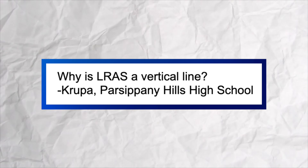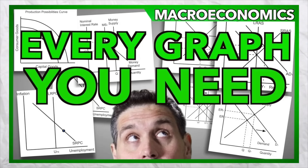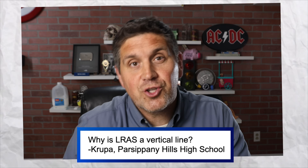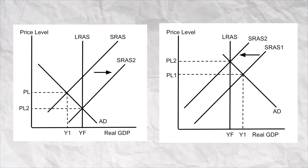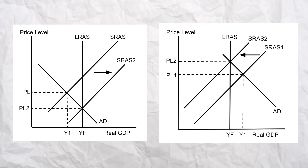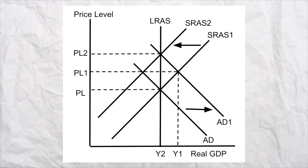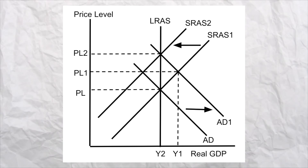Why is the long-run aggregate supply curve vertical? Make sure to watch the video on YouTube where I go over the key graphs you need to know. The quick answer is aggregate demand can increase or decrease in the short run, but in the long run the economy is going to self-adjust and put us back at that vertical long-run aggregate supply. It's vertical because in the long run, eventually we'll be at the exact same output regardless of the change in price level. Watch out for that on multiple choice questions — whether it says short run or long run will change the answer, so read carefully.